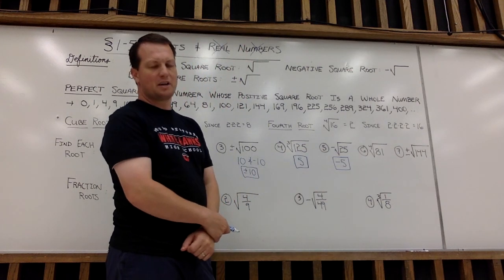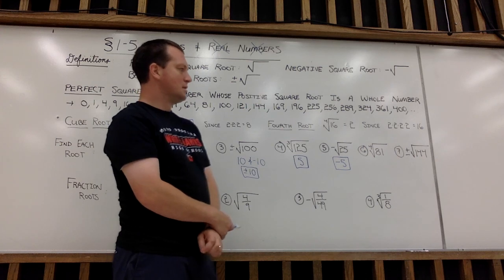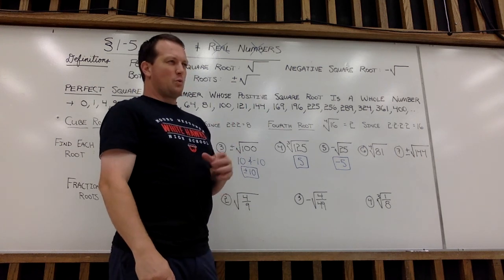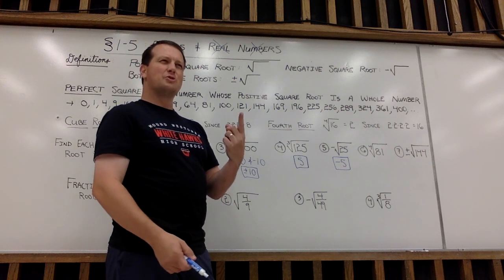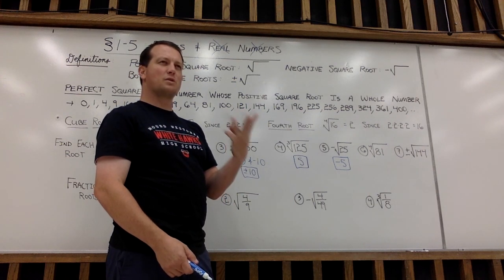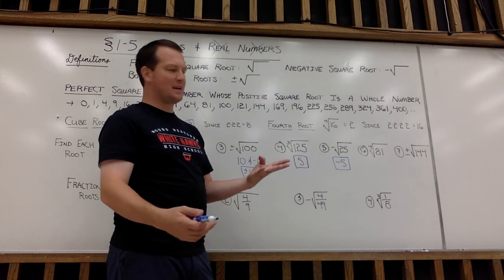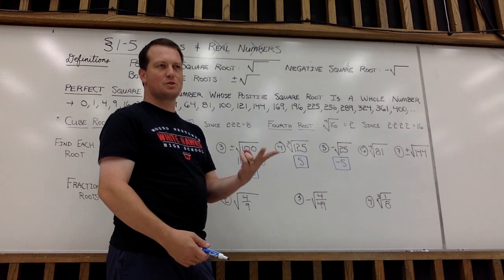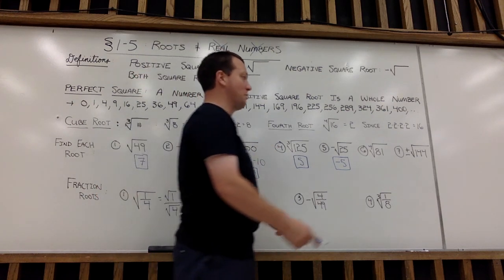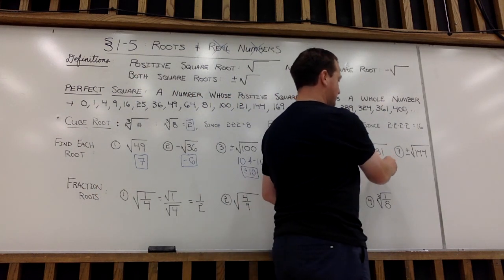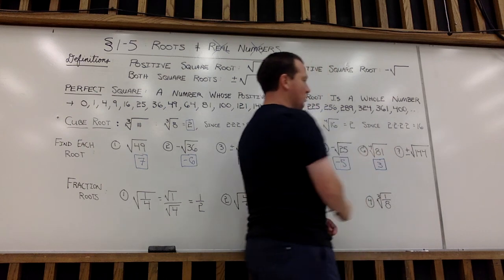6, the 4th root of 81. Here's a trick, not really tricky, but a challenging one for you here. So I want to think what number times itself 4 times would give me 81. Well, 2 times 2 is 4, times 2 is 8, times 2 is 16, so it's not 2. How about 3? 3 times 3 is 9. 9 times 3, 27. 27 times 3, 81. So the 4th root of 81 would be 3.